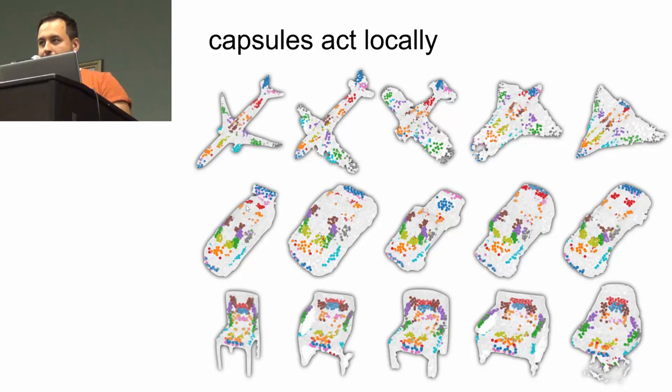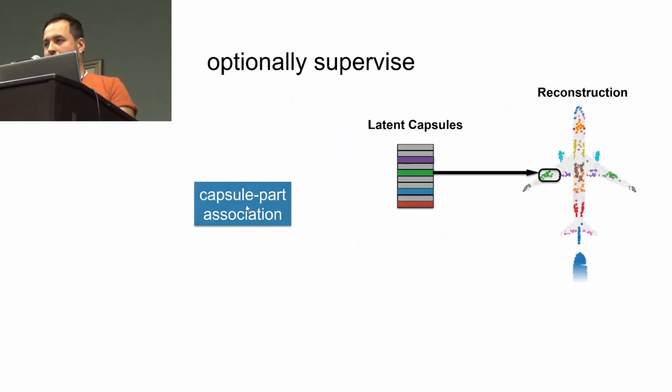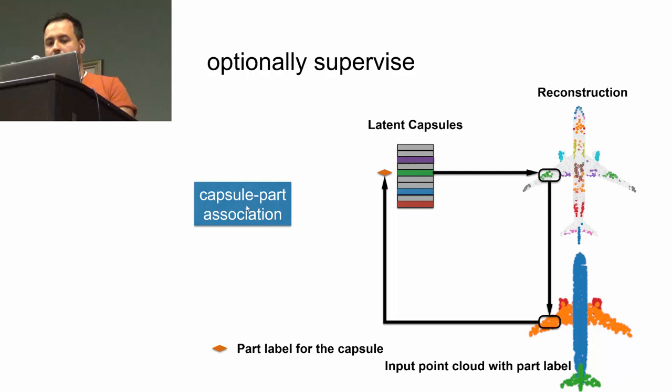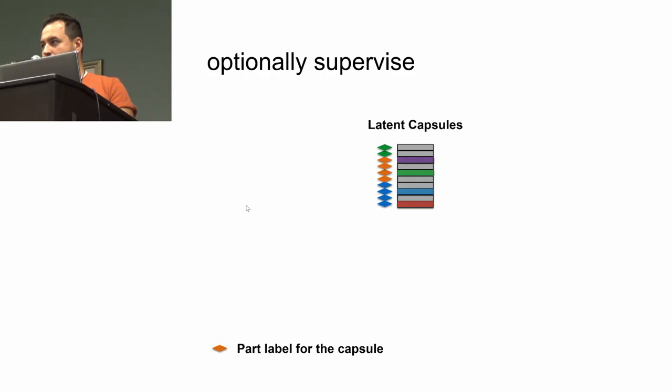This immediately calls for part segmentation because now we have already these things across different parts. What happens if I supervise this thing now? Just take a part segmentation dataset where the objects are labeled with parts, and I will make my capsules specific to those parts. I will sample the part labels for it and associate them, and I can do this for multiple capsules. Multiple capsules can come from the same part.